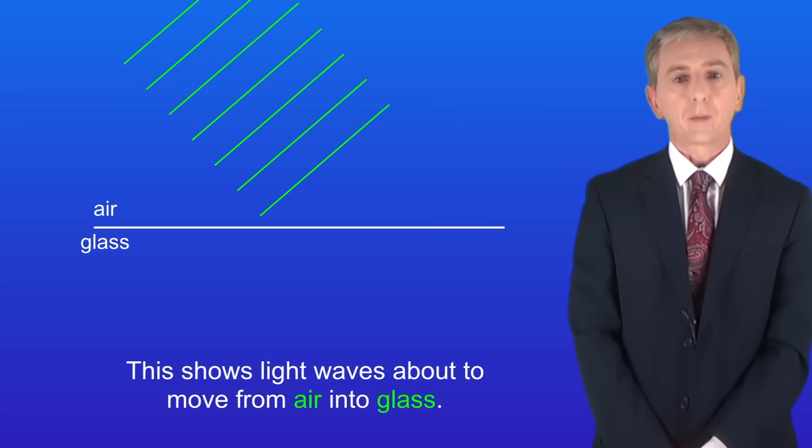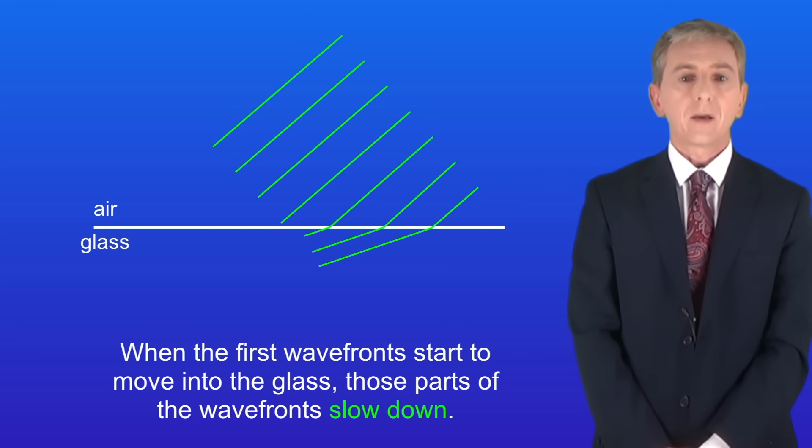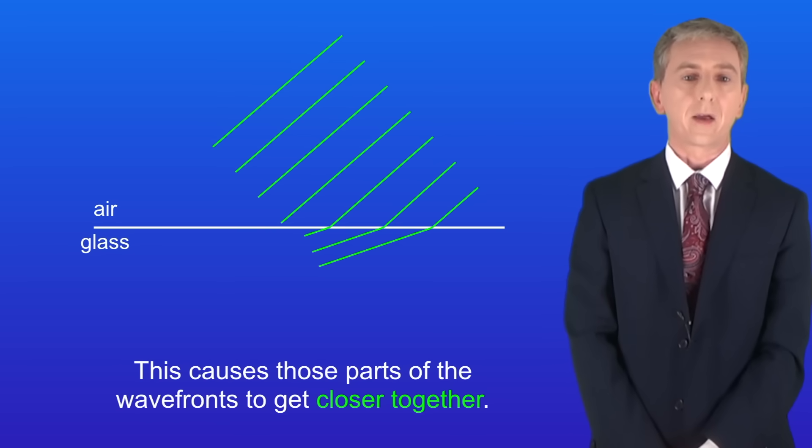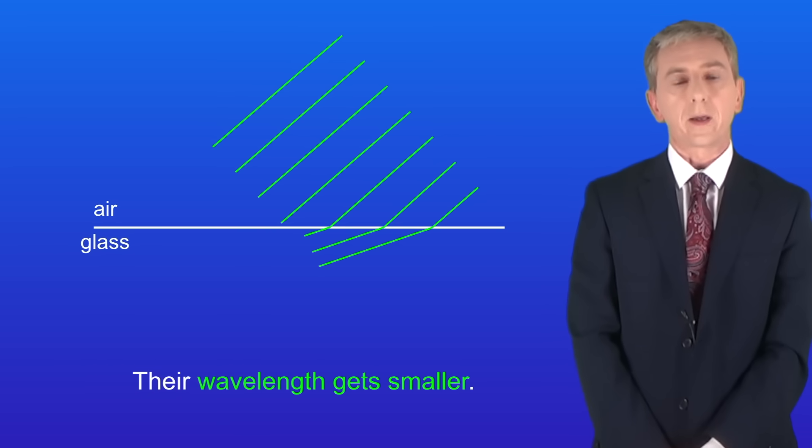This shows light waves about to move from air into glass. Now when the first wavefronts start to move into the glass, those parts of the wavefronts slow down. This causes those parts of the wavefronts to get closer together. As you can see their wavelength gets smaller.